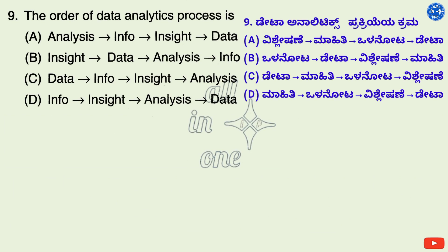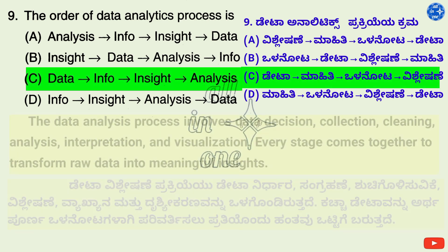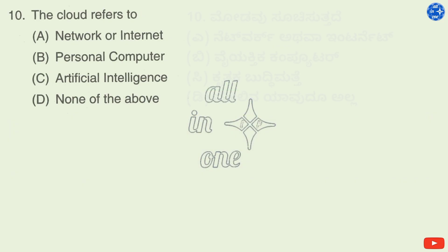Question 9. The order of the data analytics process is — Options: A. Analysis, info, and site data, B. Insight, data, analysis, info, C. Data, info, and site analysis, D. Info, and site analysis, data. Right answer is C: Data, info, and site analysis. The data analysis process involves data decision, collection, cleaning, analysis, interpretation, and visualization. Every stage comes together to transform raw data into meaningful insights.